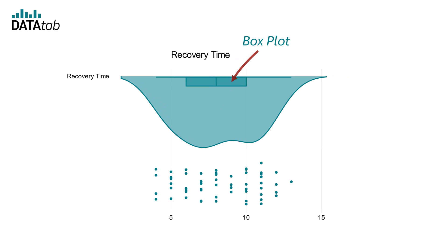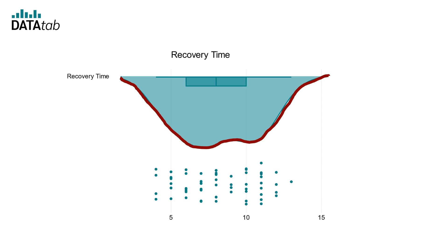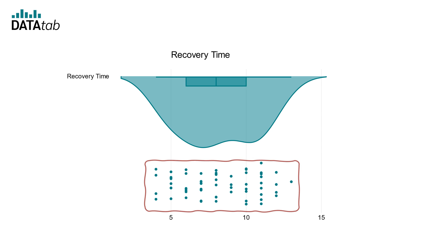It essentially brings together the power of a box plot, a violin plot, and a strip or swarm plot, making it easier to understand both the overall distribution and the raw data of a given variable or group.